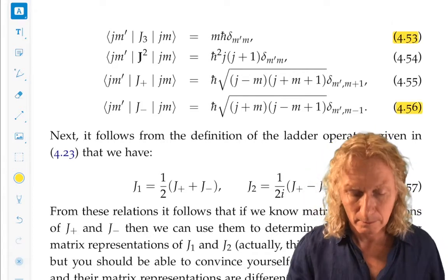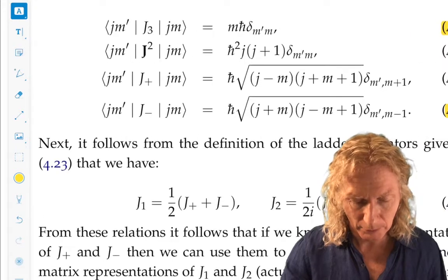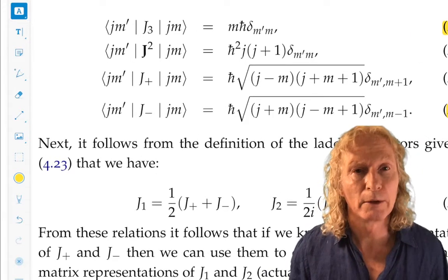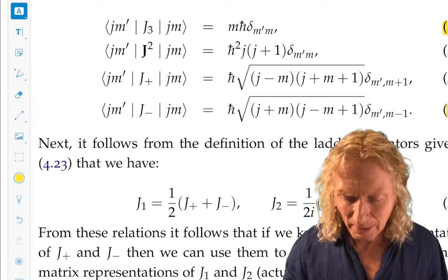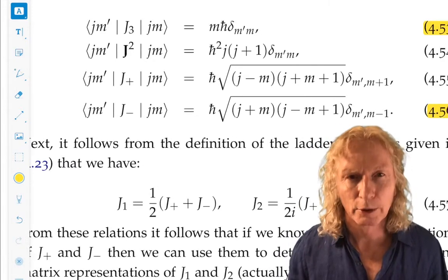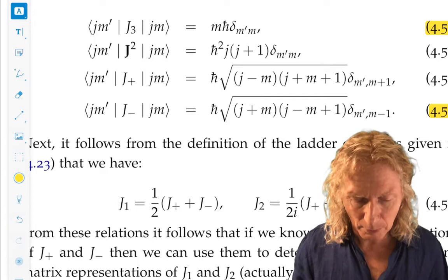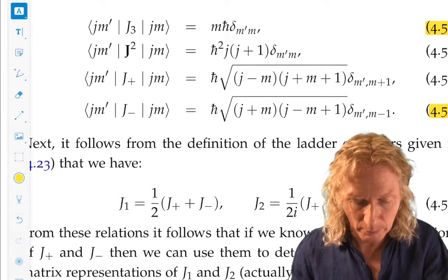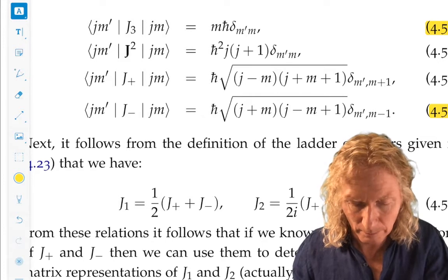Now, these are matrix elements for j3, j2, jplus, and jminus. These I expect you should be able to compute fairly simply. Look at the Kronecker delta structure for each one of them - j3 and jsquared, the first two.